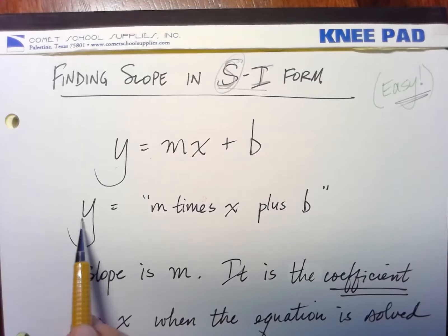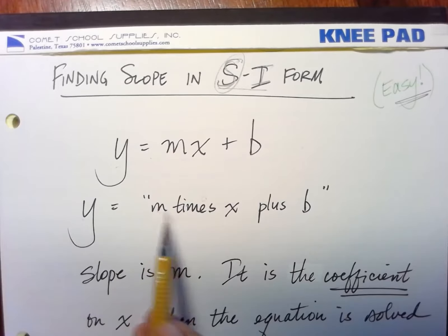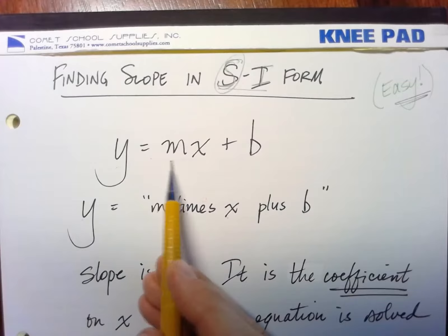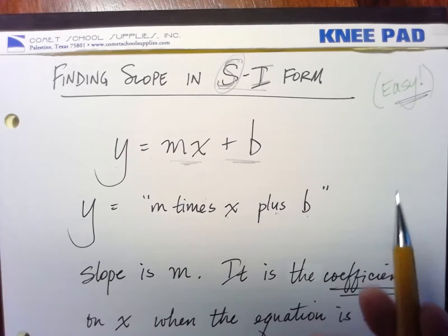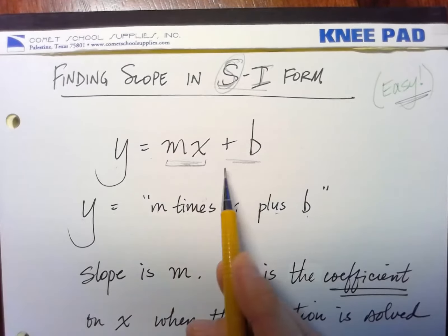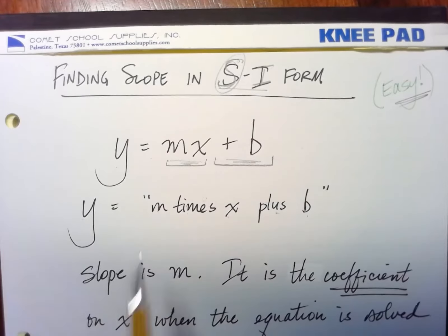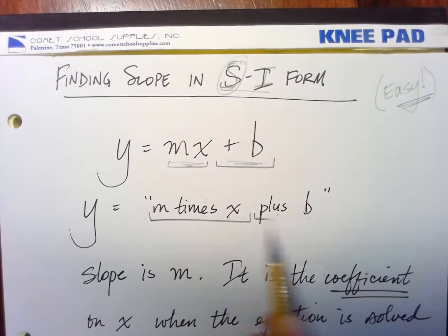Notice that this is saying Y equals m times x. M times x plus b. Plus b. That's what we're looking at. M times x plus b. That's what we're looking at right there. M times x and plus b.